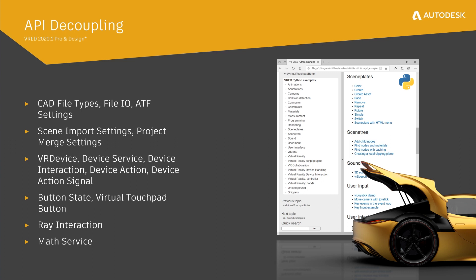All the existing modules, we try to decouple step-by-step or rework them completely. With FRED 2020.1, we provided an API for our FireIO service and ATF settings, so users can better automate and customize their data translation process. Also, with the need for more customization in VR, we have introduced many new services and commands in the Python API as well.